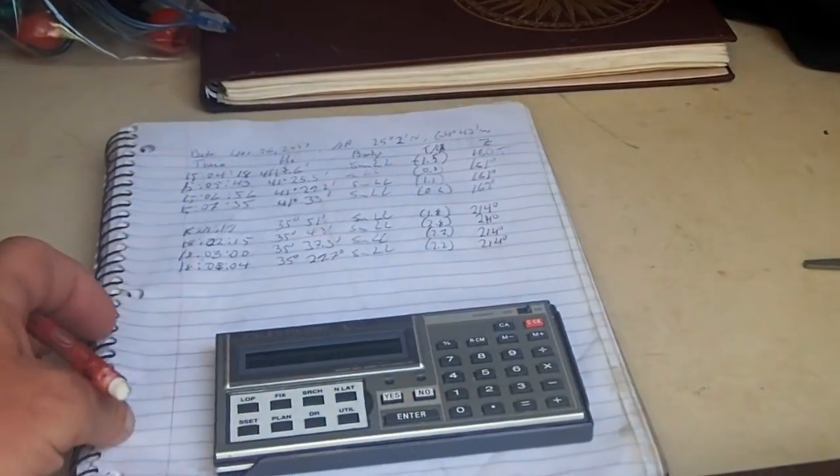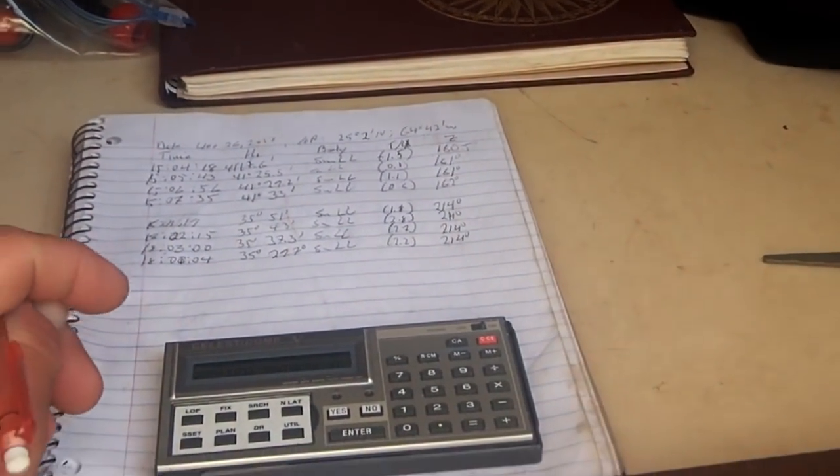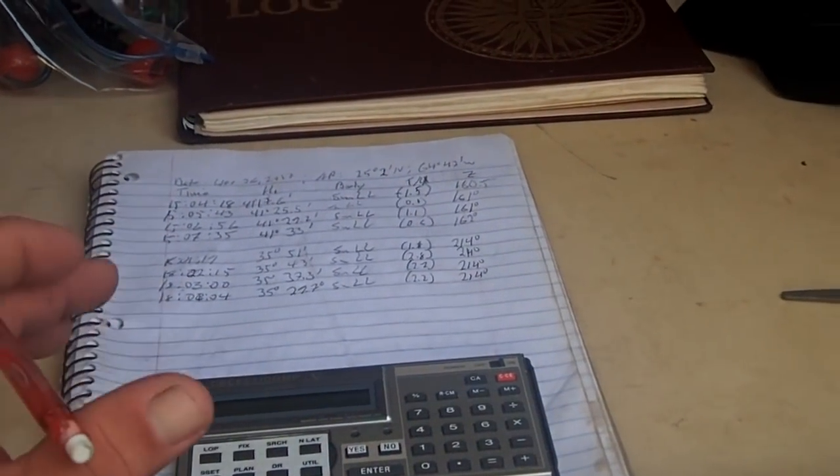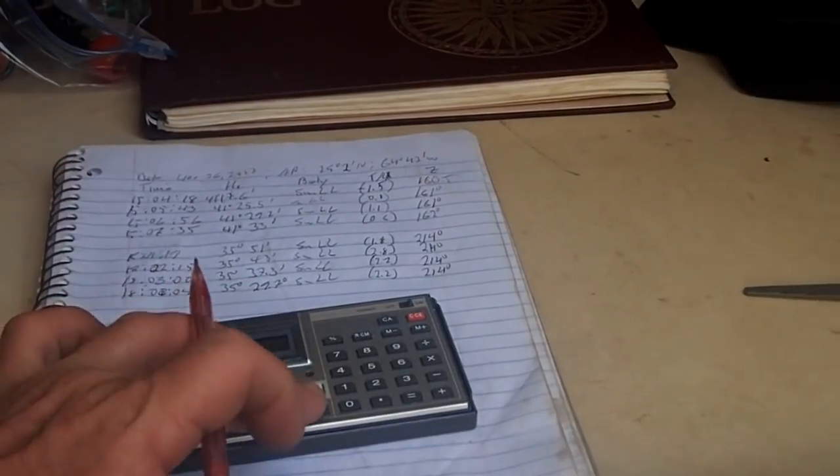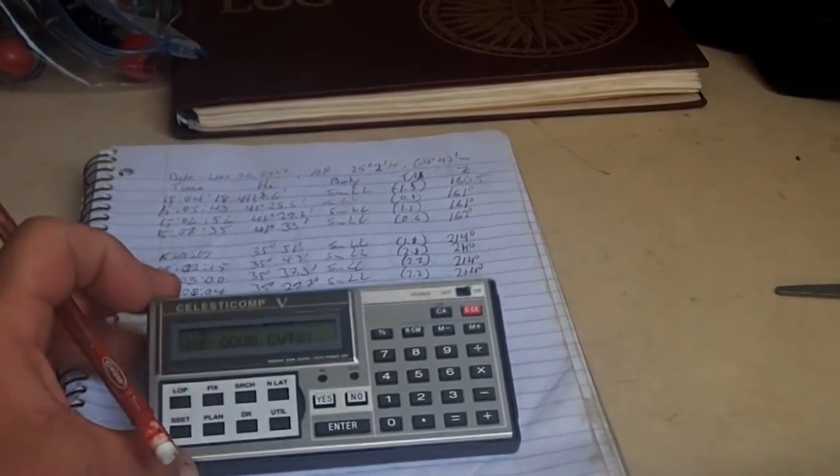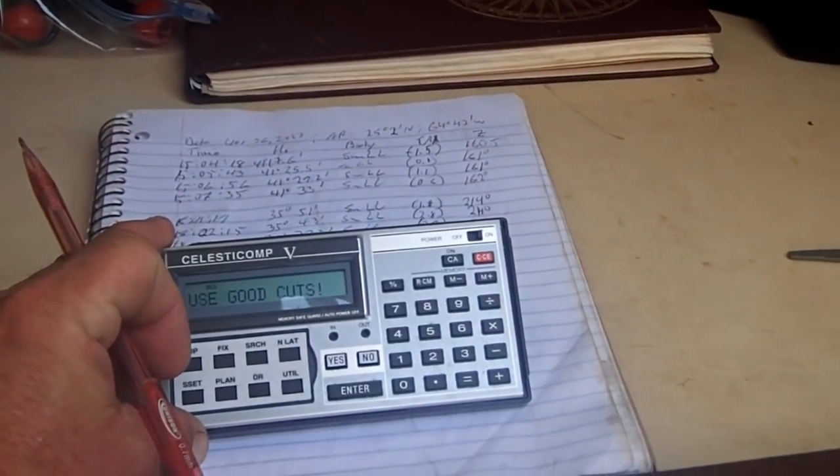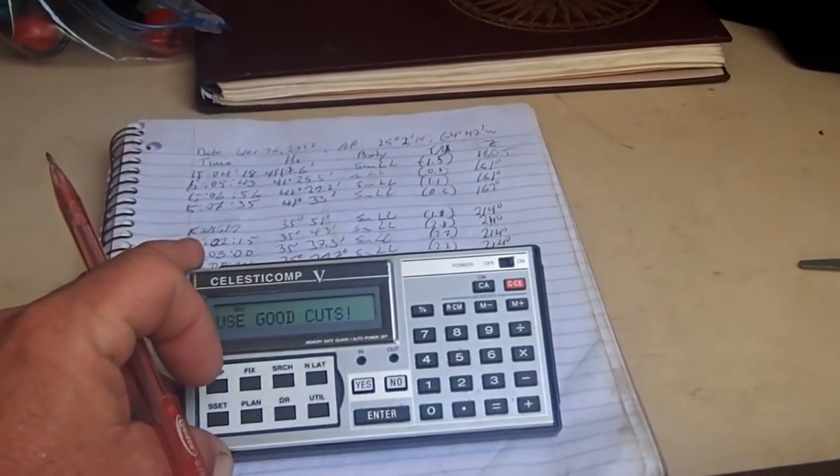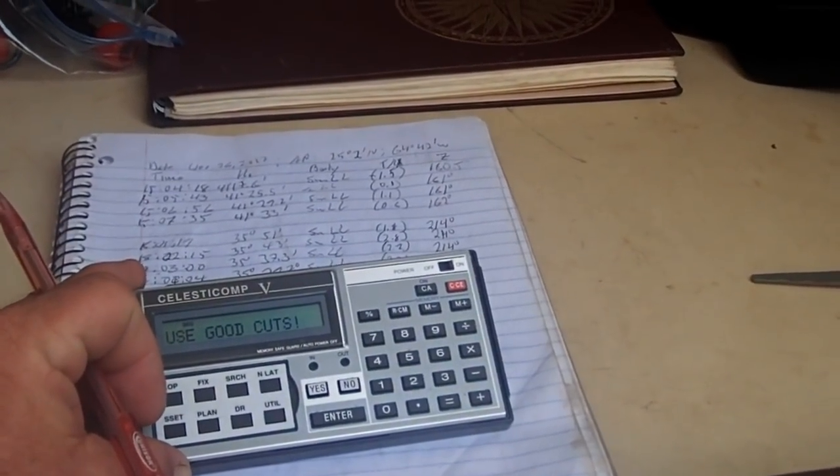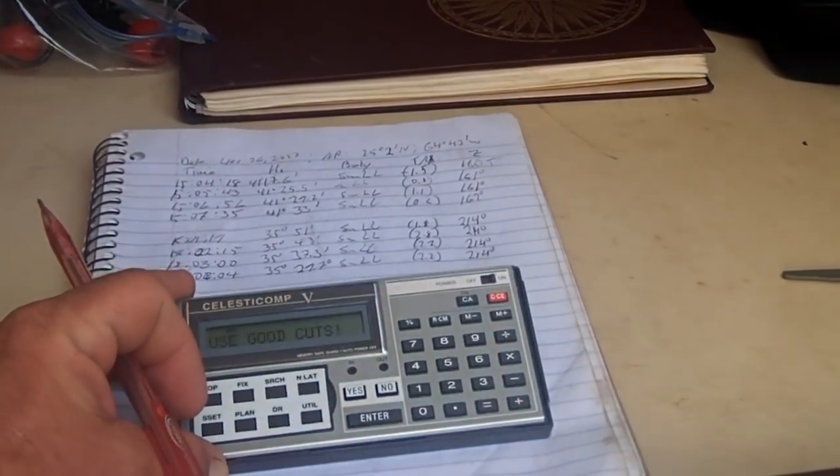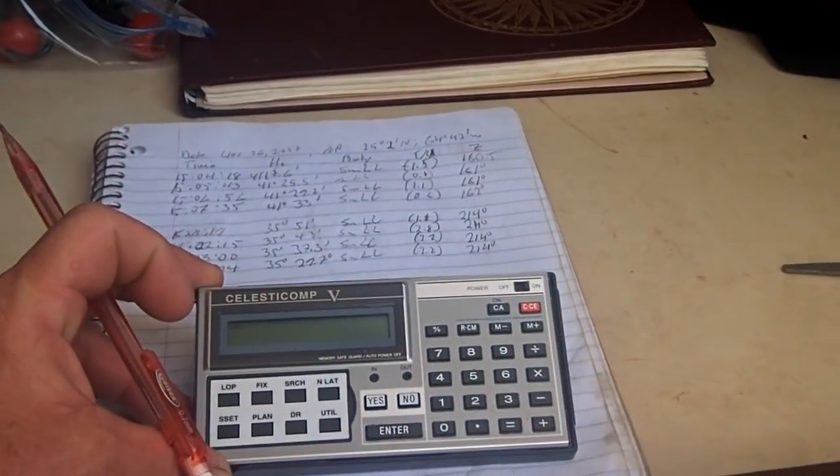Okay, so we're not going to do all this manually, but we're going to let the Celesticomp compute a fix for us. Lot long fix. Yes. LOPs compute. Yes. Now, it reminds you, use good cuts. That means make sure those LOPs, between the morning and the afternoon, or if you're shooting different bodies, like the sun and the moon, that you have a good angle there. Try to get at least about 45 degrees. Nope, we're not going to cancel any LOPs, and now it's thinking.